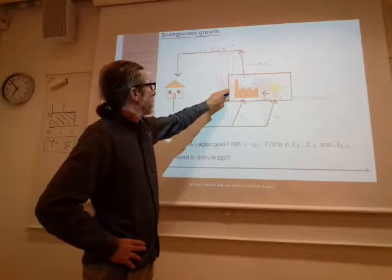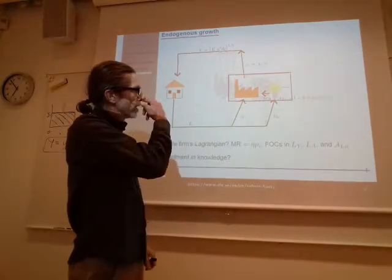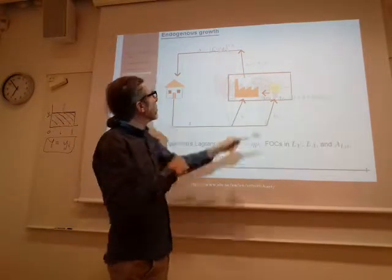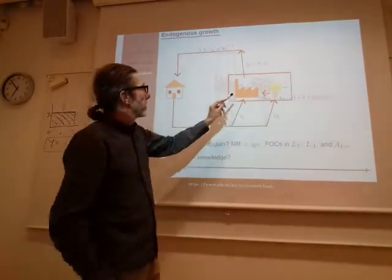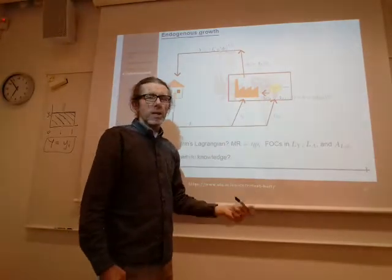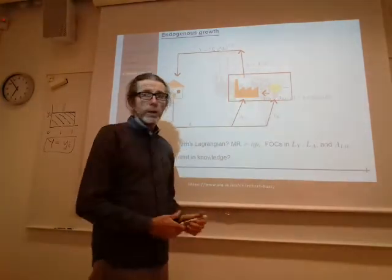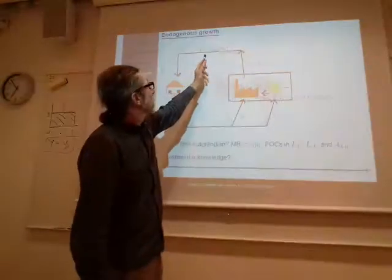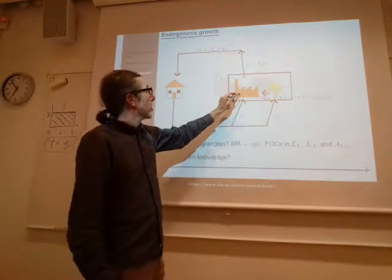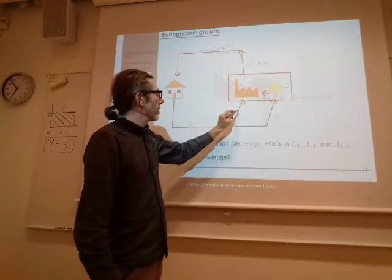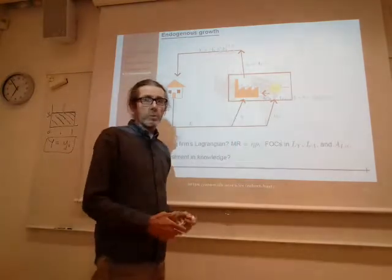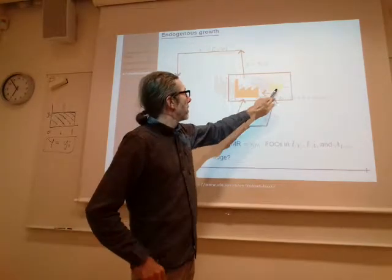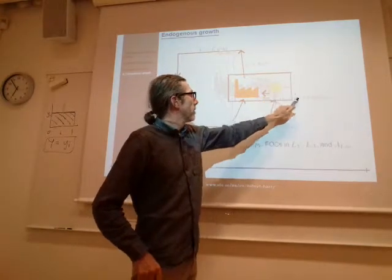But if we differentiate between the products a bit, what it means is that each firm, so eta is less than 1, what it then means is that each firm is less keen to hire extra labor and raise its production, because that will lead to a lower price and cut revenue. So that means that the workers are in a less good bargaining position and the wages will be lower, which gives some cash over to pay for research.